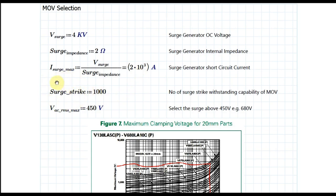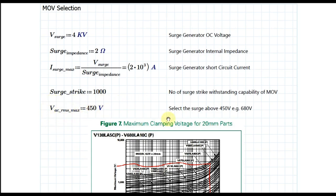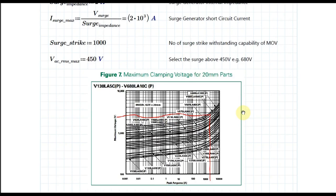Now, let's say you want to design an MOV that can withstand 1000 surge strikes. Your RMS input voltage is 450 V. You should select an MOV rated at least 1.2 times your rated RMS voltage. For 450 V RMS, you may select an MOV rated for 680 V RMS.